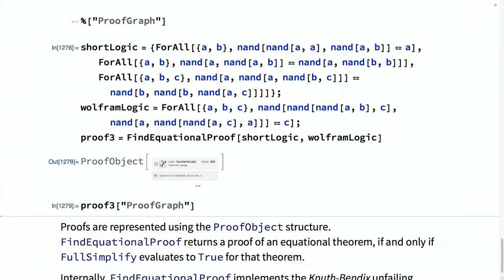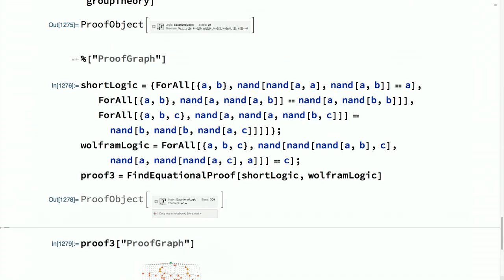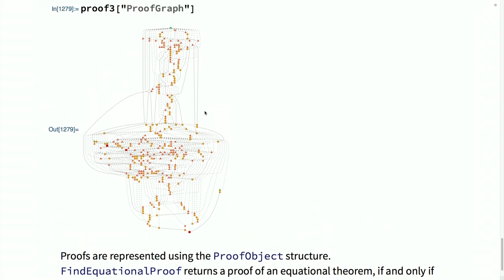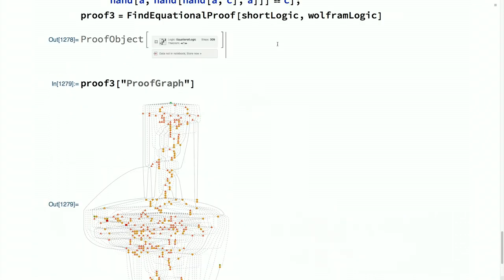I accidentally ran the next example, which was an open research problem for a long time — proving that a single axiom for Boolean logic presented by Stephen Wolfram in NKS, which defines the NAND operator or the Sheffer stroke operator, implies all the standard algebraic properties of that operator. This was an extremely complicated automated derivation — it took 309 steps — but it didn't take more than a few seconds to evaluate. FindEquationalProof returns a proof object if and only if FullSimplify would have evaluated to true for that equational logic theorem.